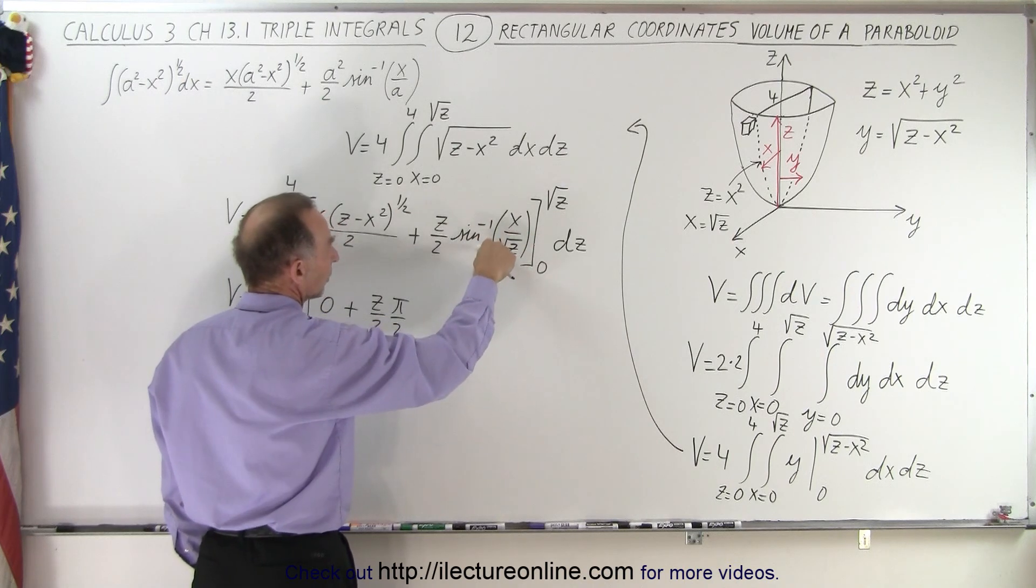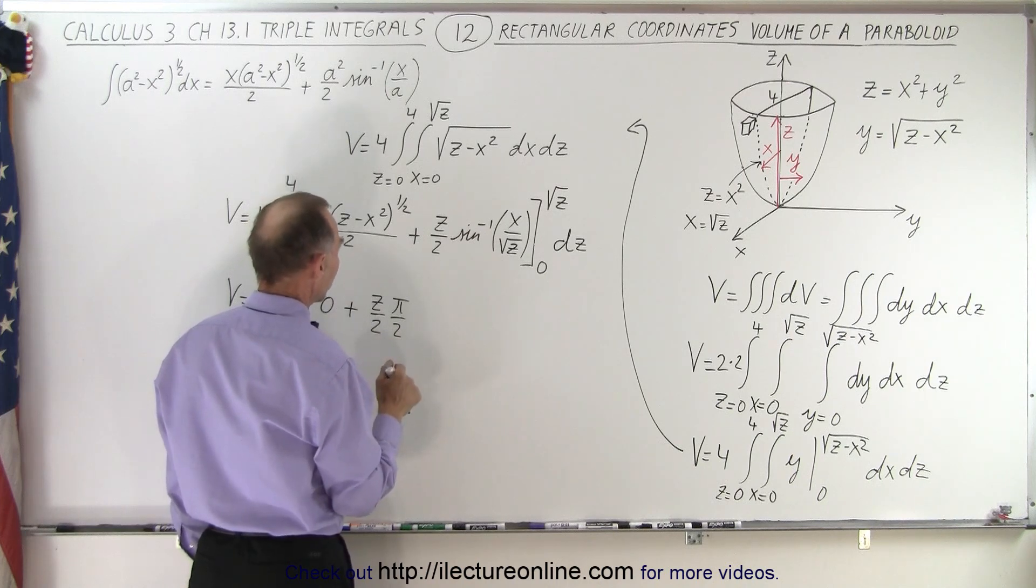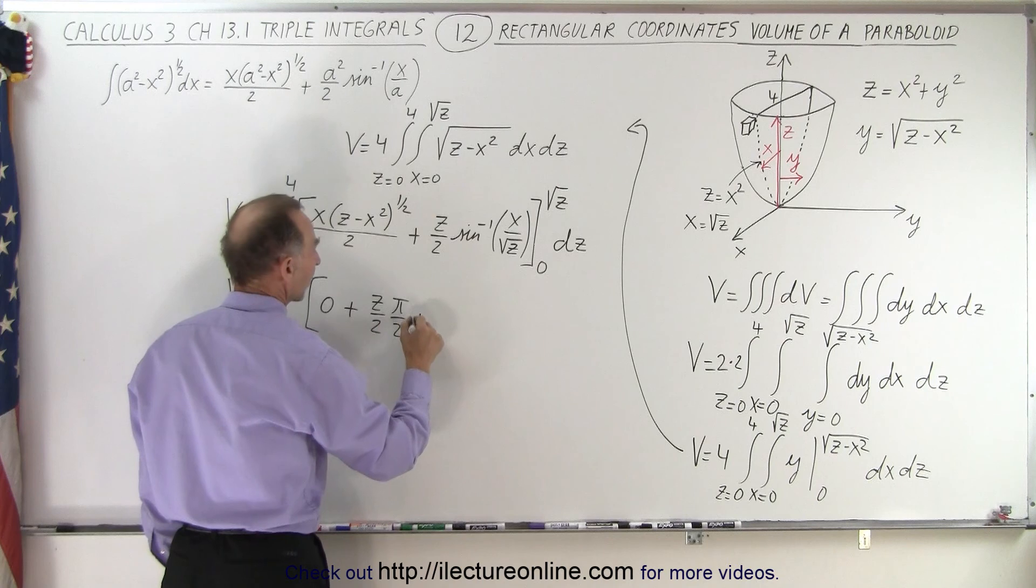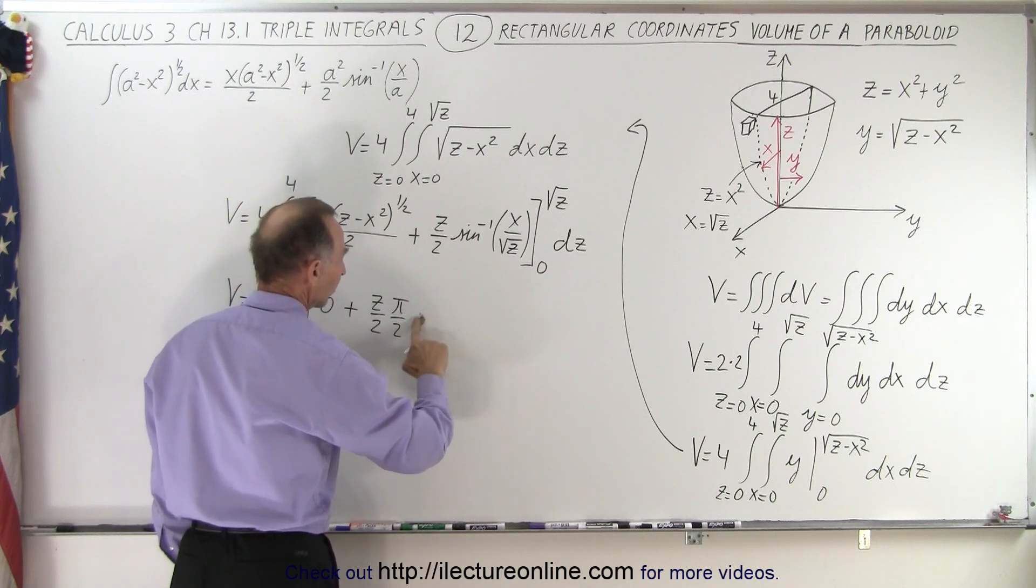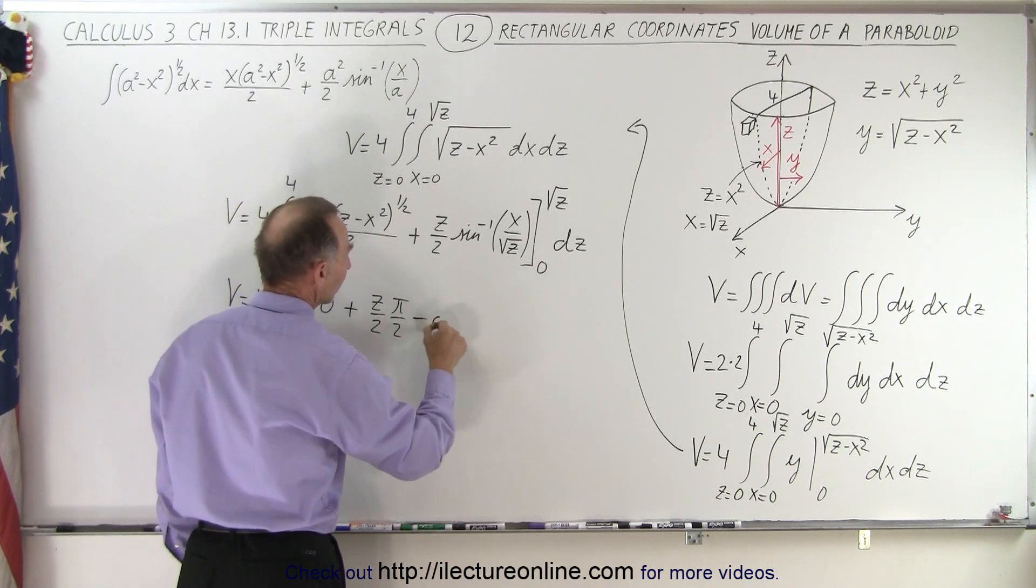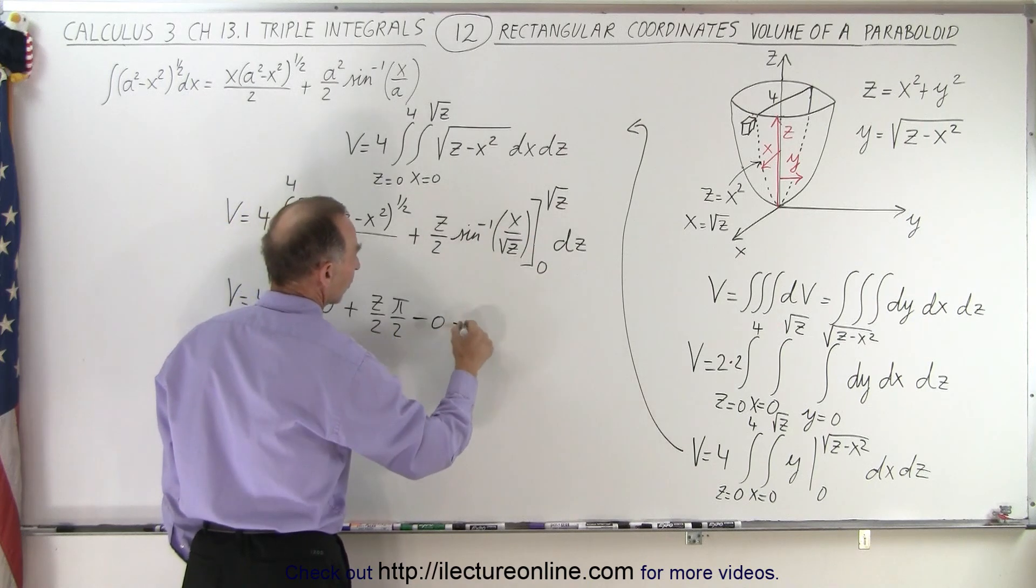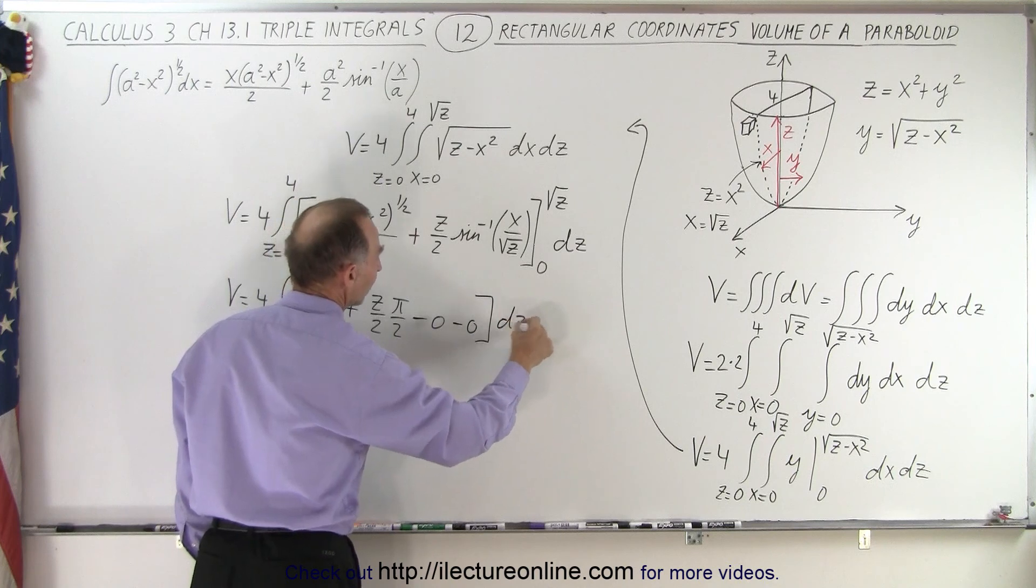Right so this will give us pi over 2 because this is the inverse sine of 1 and we still have z over 2 here. Then when we plug in the lower limit 0 into x that gives us 0, oh I should actually subtract because it's a lower limit, minus 0, and then we plug in 0 for here the inverse sine of 0 is also 0, and we get times dz.